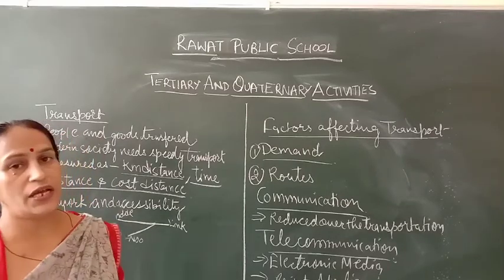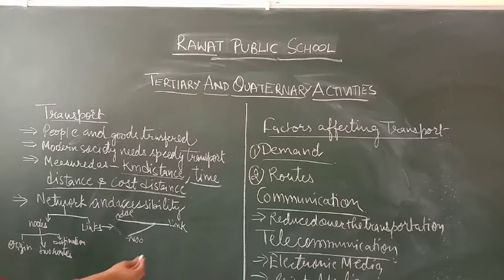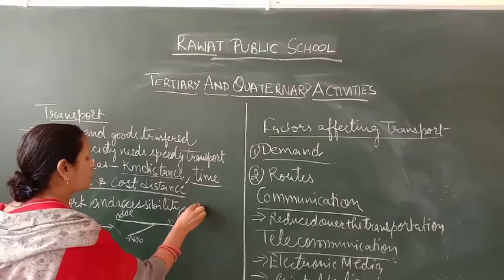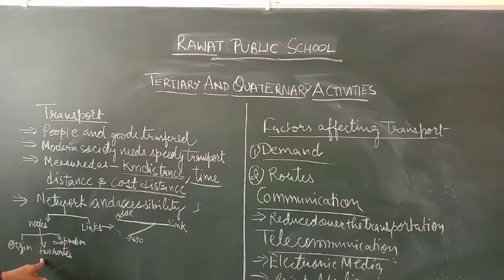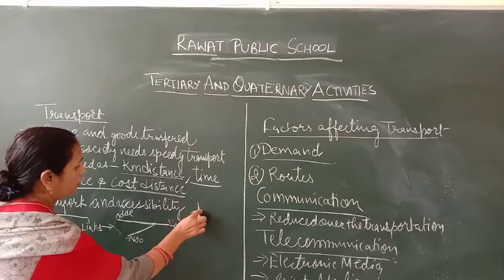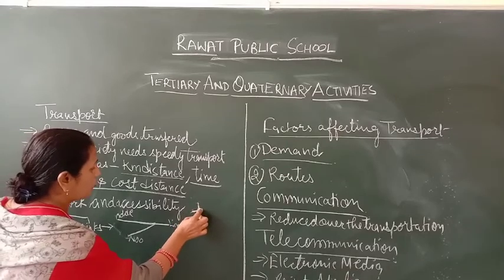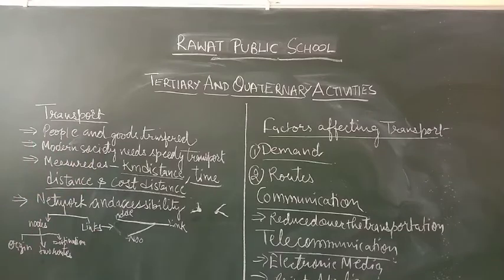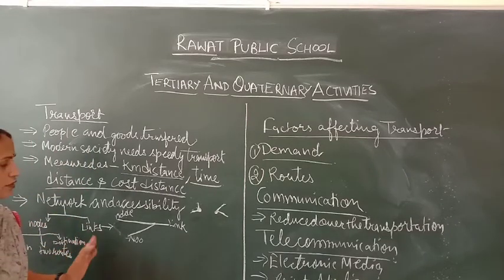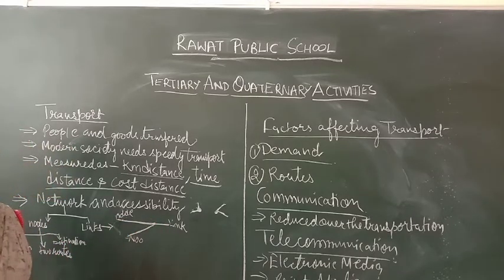Next is network and accessibility. A network is divided into nodes and links. Nodes are places — it can be the place of origin where a journey starts, or a destination. A link is the connection which links one node to another. So nodes are the points and links are the connections between those points in a transport network.